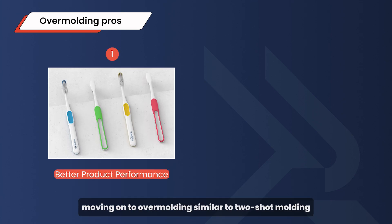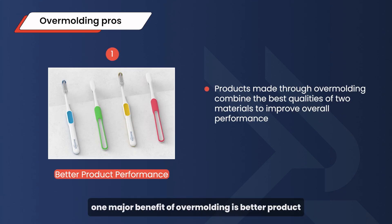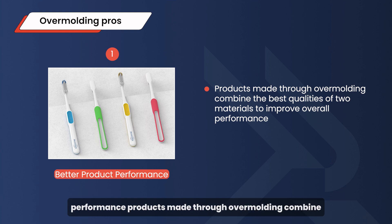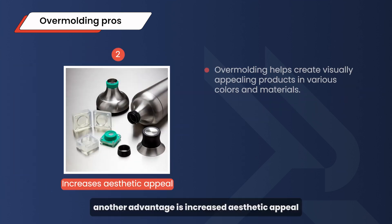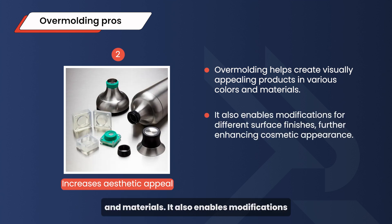Moving on to overmolding. Similar to two-shot molding, one major benefit of overmolding is better product performance. Products made through overmolding combine the best qualities of two materials to improve overall performance. Another advantage is increased aesthetic appeal. Overmolding helps create visually appealing products in various colors and materials. It also enables modifications for different surface finishes, further enhancing cosmetic appearance.